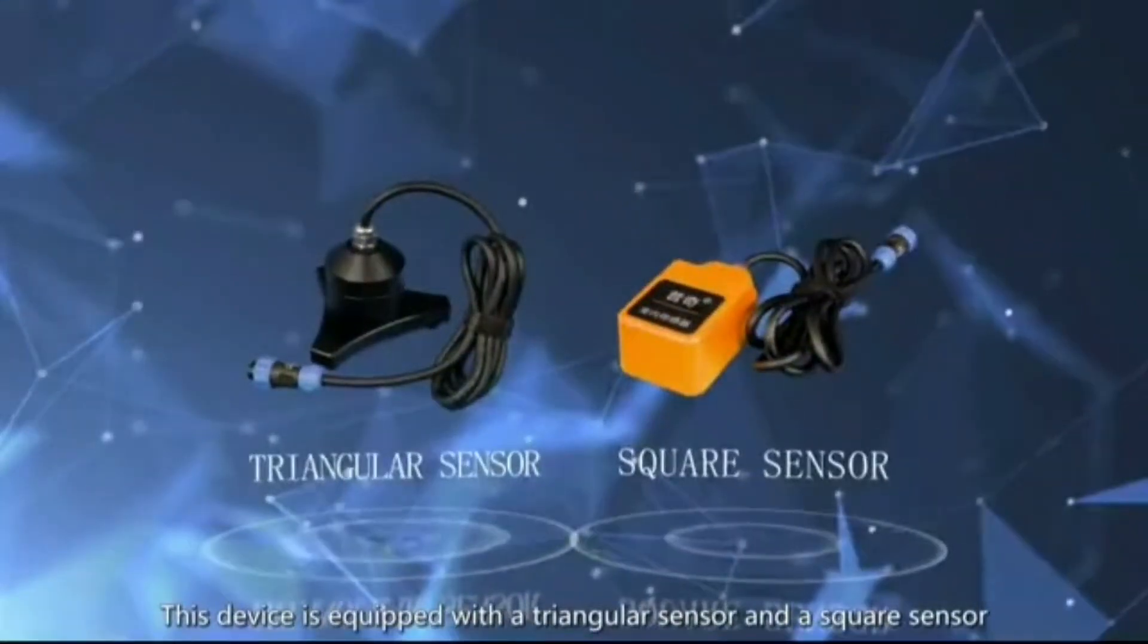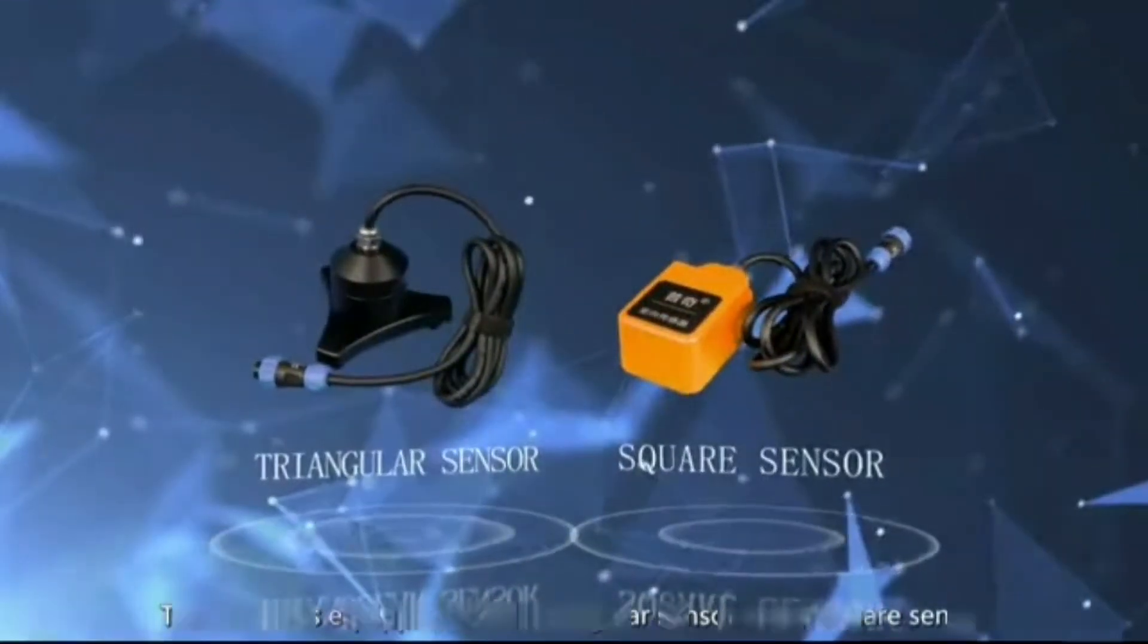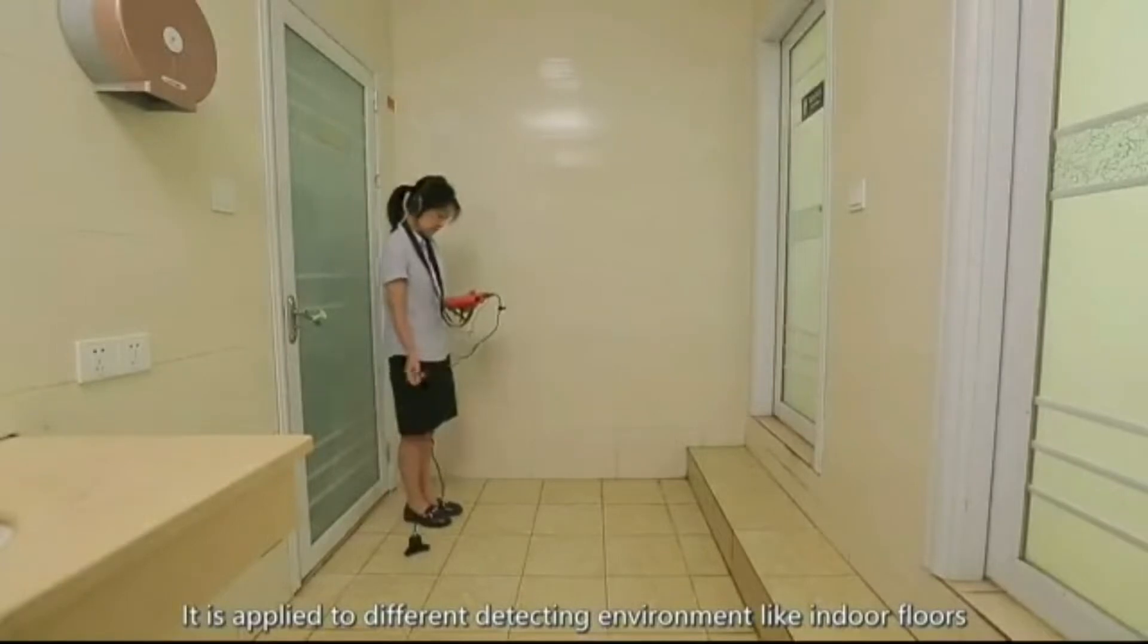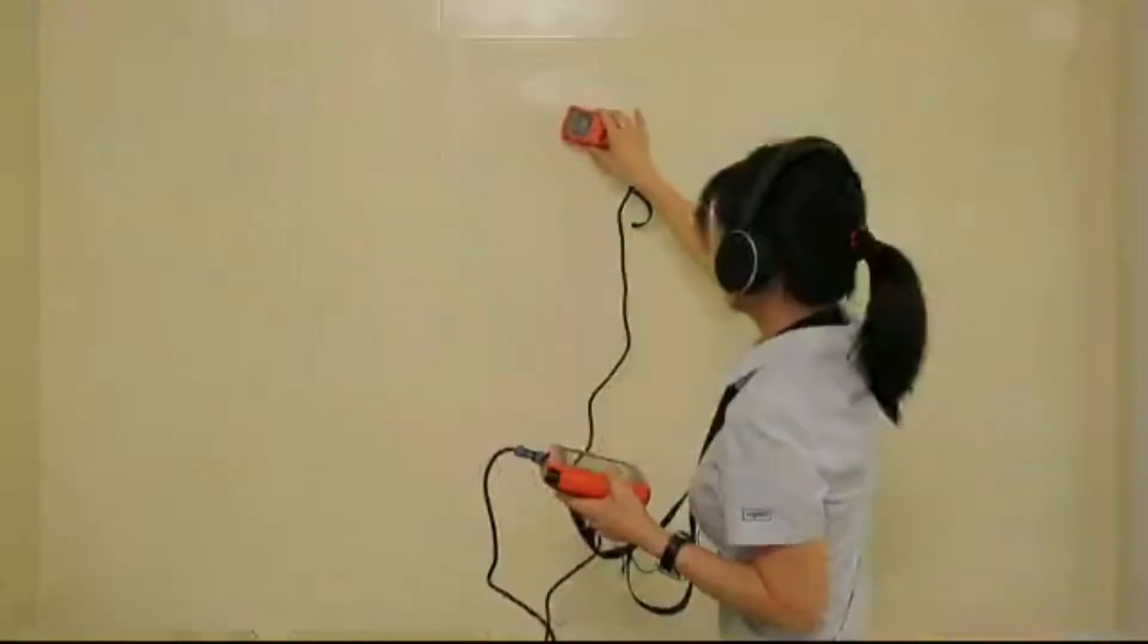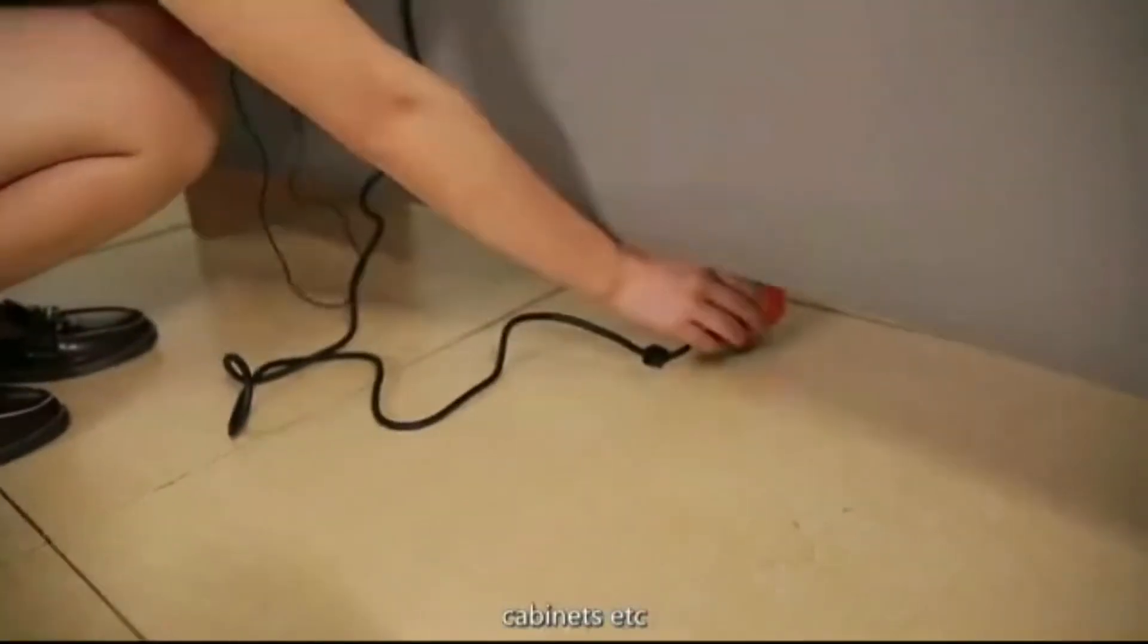This device is equipped with a triangular sensor and a square sensor. It is applied to different detecting environments like indoor floors, walls, cabinets, etc.